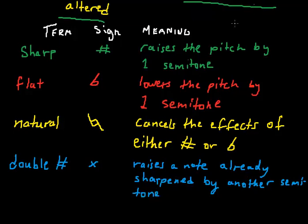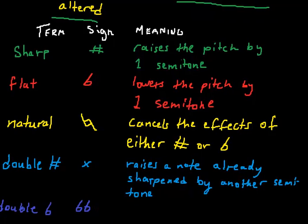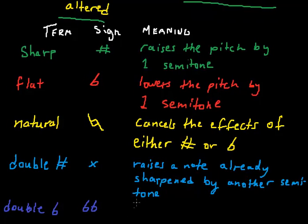And last but not least is a double flat. This is symboled with two B type objects. And again, this does the same thing: it lowers by another semitone.